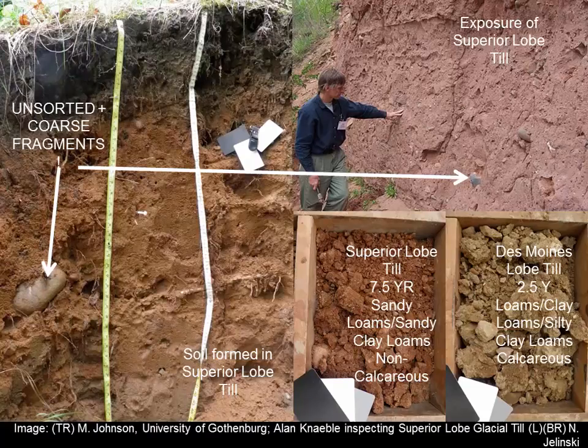Here are examples of what tills in Minnesota might look like. A soil formed in Superior lobe till shows loamy textures — unsorted — with coarse fragments visible throughout. For distinguishing tills in the field: Des Moines lobe tills tend to be yellower and have carbonates, so if you use acid and it fizzes, you know it has carbonates. Des Moines lobe tills tend to have more clay, such as clay loams and silty clay loams. Superior lobe till is redder because it went over iron-rich igneous rocks, has less clay, and is non-calcareous — no carbonates. So we can start dividing these things in the field.